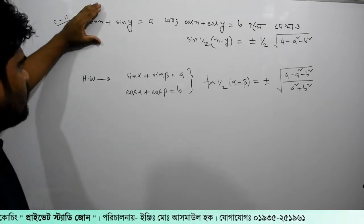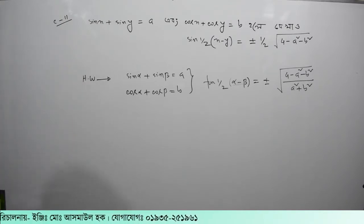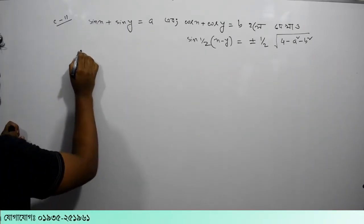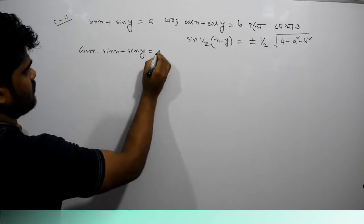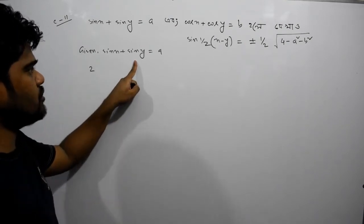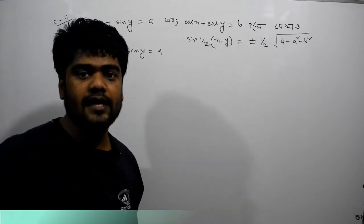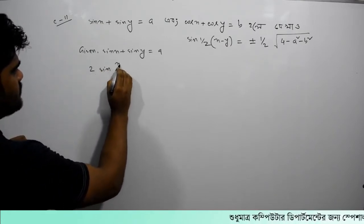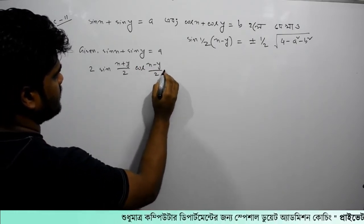This is a homework problem. Let's look at the given data: given sin x plus sin y equal to a. We will apply the sum-to-product formula: 2 sin((c+d)/2) cos((c-d)/2) equal to a.